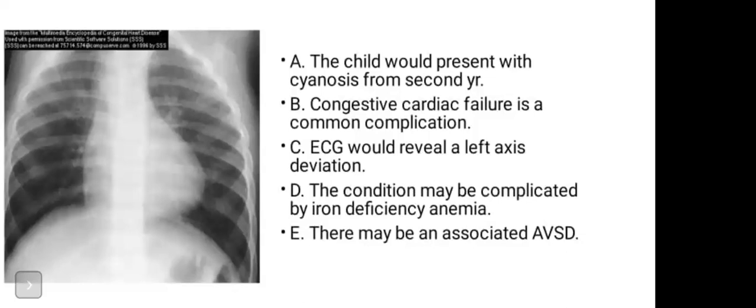D — the condition may be complicated by iron deficiency. In TOF, because the body feels oxygen is low, it will be creating a lot of red blood cells. Red blood cells need iron and oxygen, so there will be a relative iron deficiency because of the excess red blood cells needing iron to form hemoglobin. There's usually a persistent hypoxic state that causes excessive stimulation of red blood cell production, because the natural response to low oxygen is to make more red blood cells — and as you make more, demand for iron is more. So D is true.